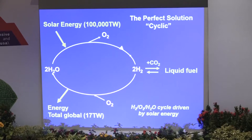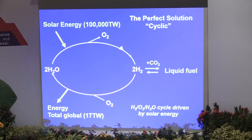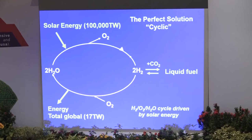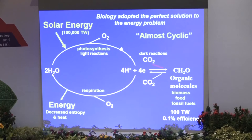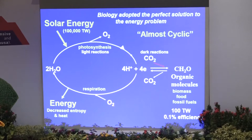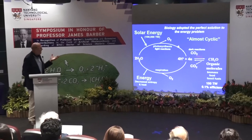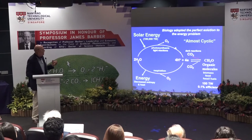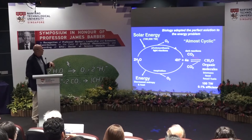We might use hydrogen directly as a very high-energy, high-density fuel, or use it chemically as a reductant to change carbon dioxide into liquid or gaseous fuel like methanol or methane. Biology, surprise surprise, invented this 3 billion years ago — the split of water was the beginning of oxygenic photosynthesis, splitting water into oxygen and hydrogen, storing the reducing equivalents as organic molecules by reducing CO2 to biomass, and of course the food we eat and the fossil fuels.